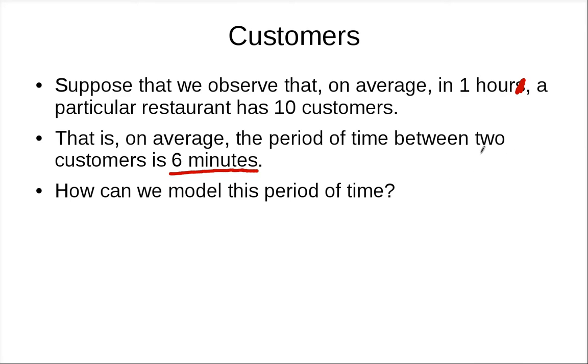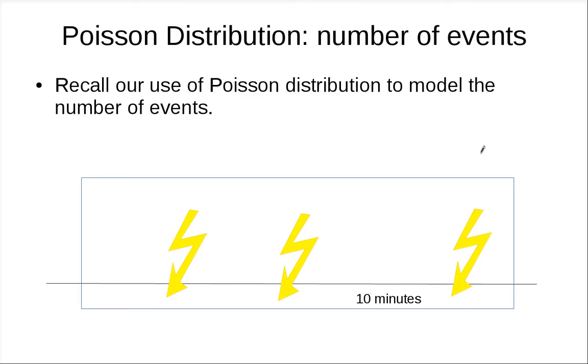For Poisson we model the number of events, right? For this we want to model the time between 2 customers. So if you think about Poisson, you fix the period of time and you want to model the number of events. So it's going to be discrete random variables because it's going to be an integer, right? Because you want to count the number of events.